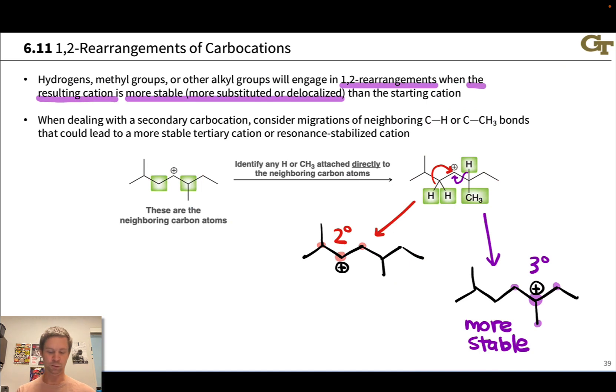Another thing you want to look out for here is the potential for generation of resonance stabilized cations. If I can shift positive charge via a 1,2-rearrangement such that I generate a resonance stabilized cation from one that is not resonance stabilized, that will occur very rapidly under the vast majority of circumstances.